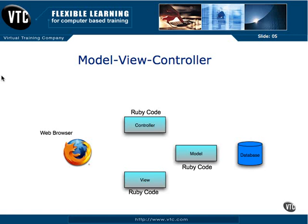The next part of Model View Controller is your View. Your view is responsible for generating your user interface, and this is generally based on the data that's inside the model. So the model will have a list of shopping cart items, and based on those items, the view will generate HTML and JavaScript with a list of those items in this example.